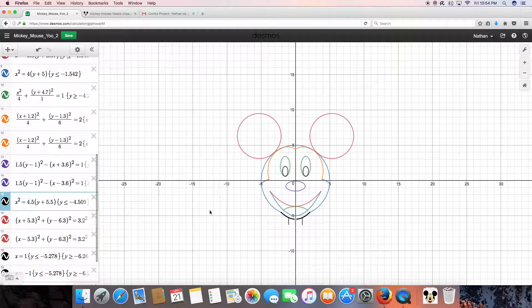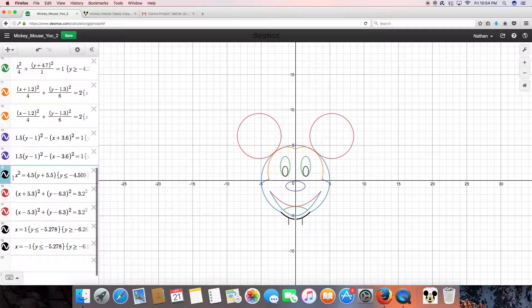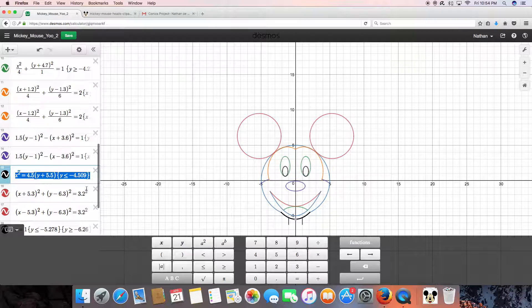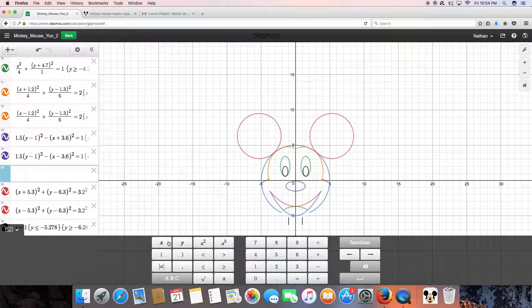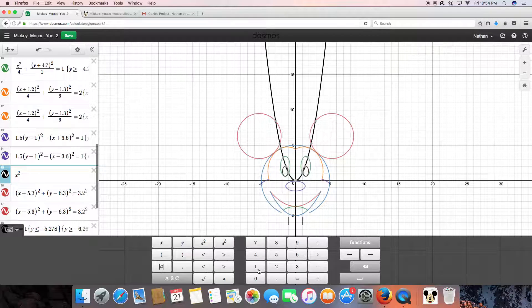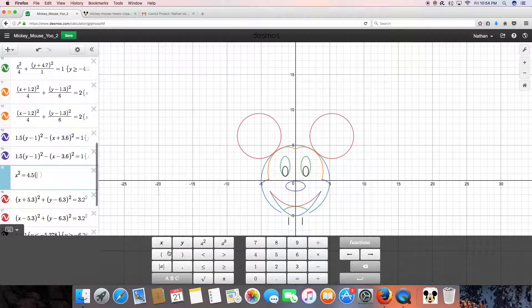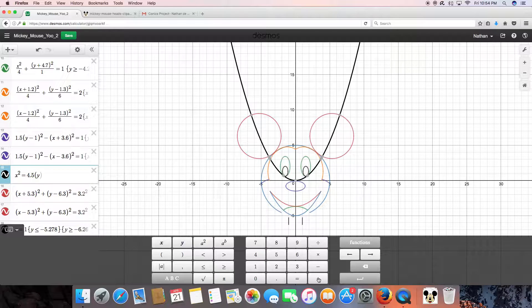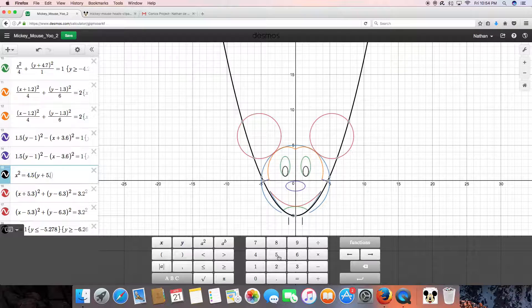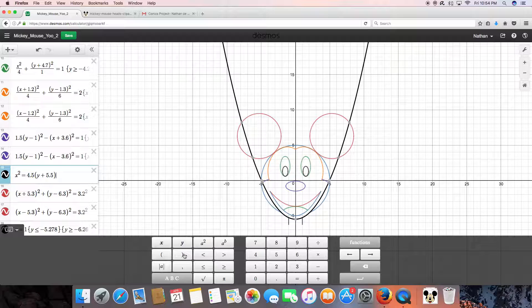Now let's move on to the chin. Now the chin is a parabola and the equation I used was x squared equals 4.5 parentheses y plus 5.5 end parentheses.